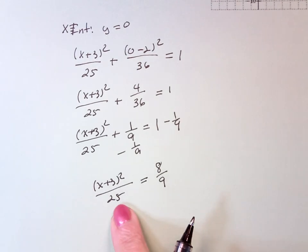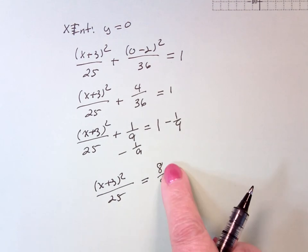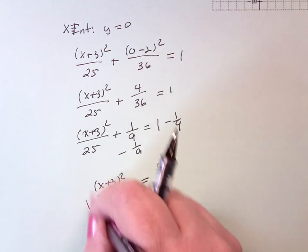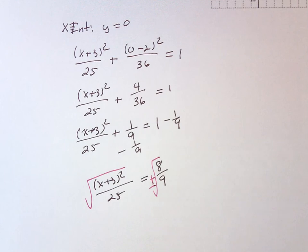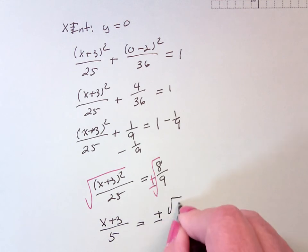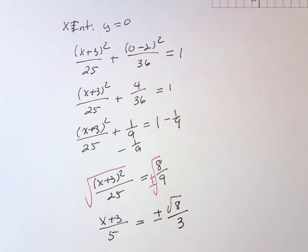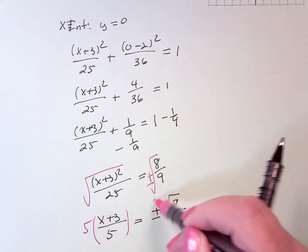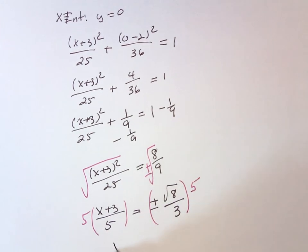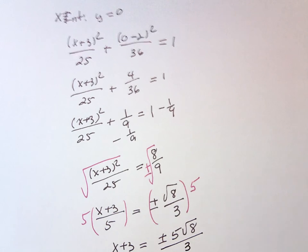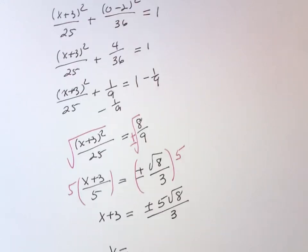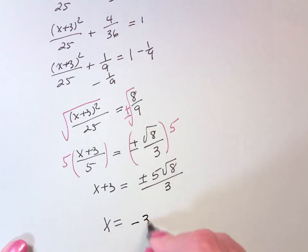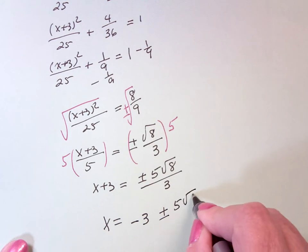Now since this is a square, I could take the square root of both sides at this point. Or I could multiply by 25. And I don't think I want to do that. So I'm going to take the square root of both sides. Don't forget the plus or minus. So that (x + 3) over 5 equals plus or minus the square root of 8 over 3. Now I'm going to multiply both sides by 5. So that x + 3 equals plus or minus 5 square root of 8 divided by 3. Or x equals minus 3 plus or minus 5 square root of 8 over 3.